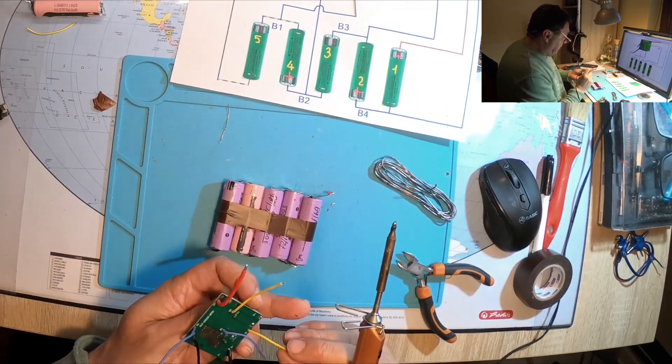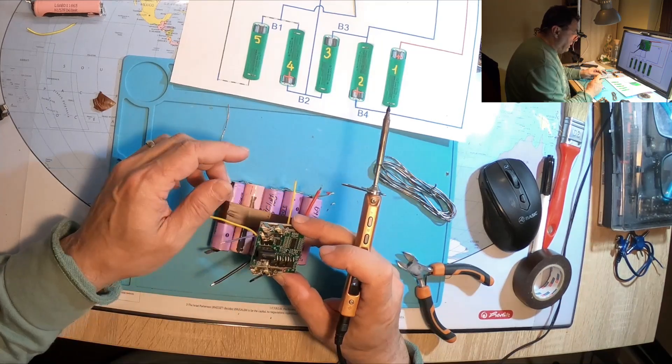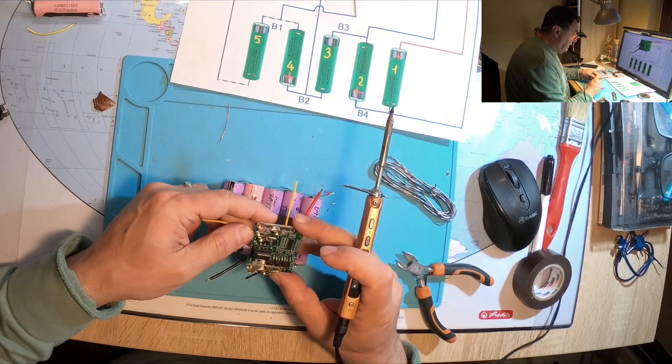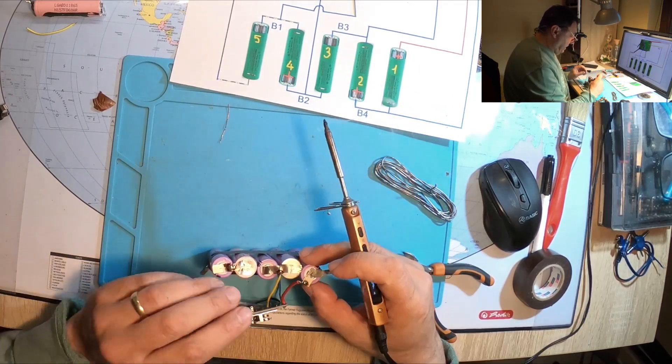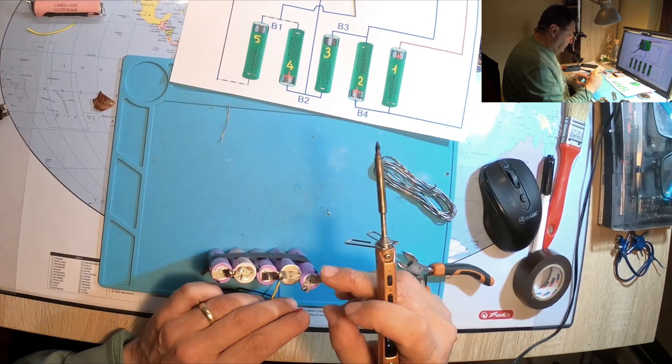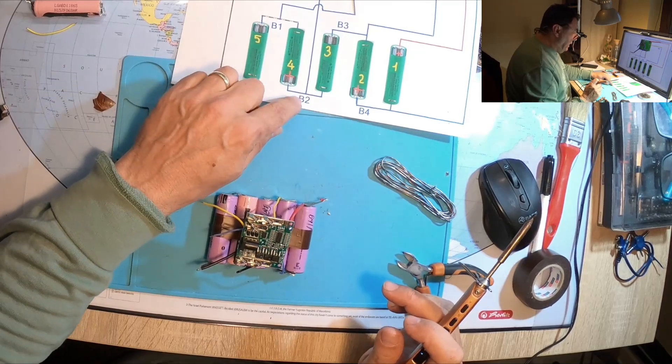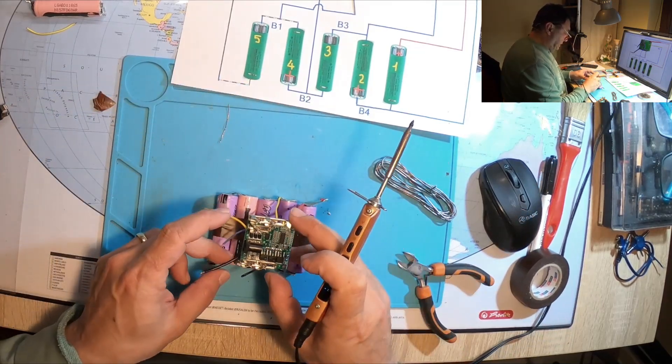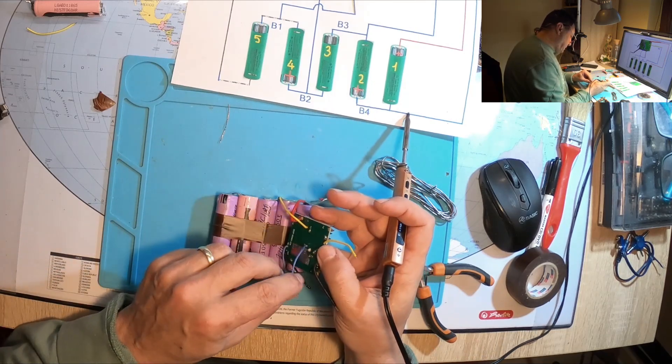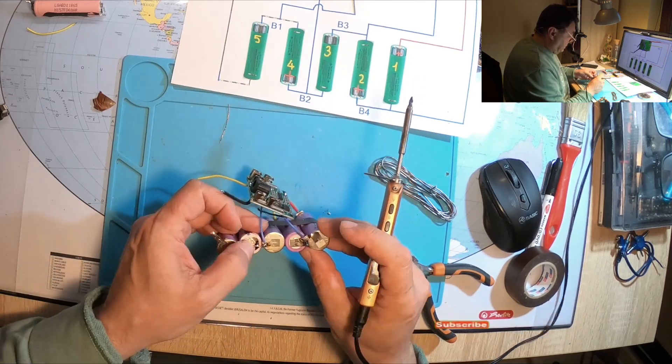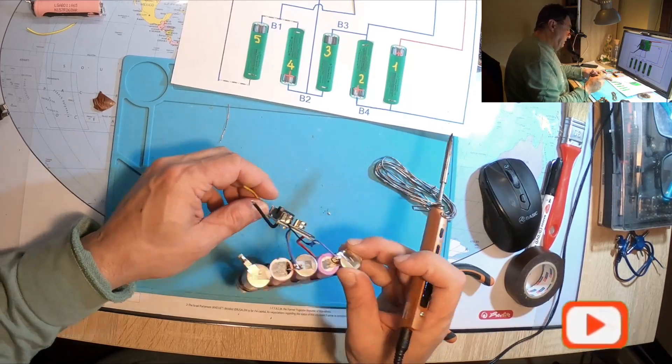Then we should have B4. Maybe I shouldn't have disconnected first. Let me see, B4 is right here. Lovely. Then we got B3 in the middle, right there. All right, let's connect B+ on cell number one. Then B3. Then we have B2, which is this blue one down there. Yeah, B2, very nice.